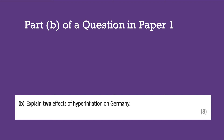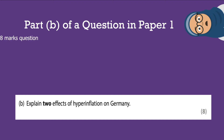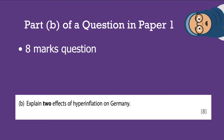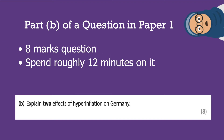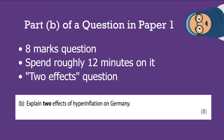Here's an example Part B question: 'Explain two effects of hyperinflation on Germany.' As you can see, it's an eight-mark question. Since it's not a large number of marks, you should spend roughly 12 minutes on it, saving more time for the longer Part C answer. Part B is also known as the 'two effects question,' which is what people mostly call it - remember that when you think of Part B.